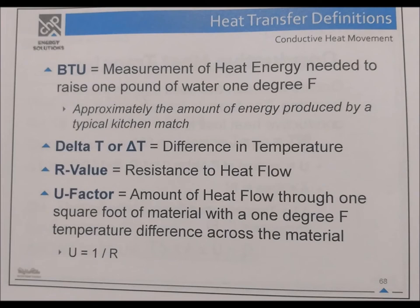BTU equals the measurement of heat energy needed to raise one pound of water one degree Fahrenheit — approximately the amount of energy produced by a typical kitchen match. Delta T equals the difference in temperature. R-value equals the resistance to heat flow. The U-factor equals the amount of heat flow through one square foot of material with a one degree Fahrenheit temperature difference across the material. U equals 1 divided by R.